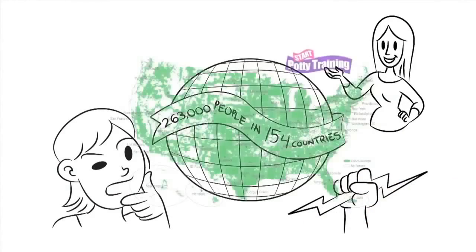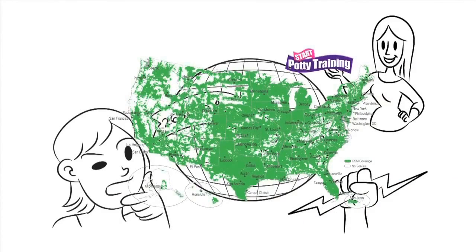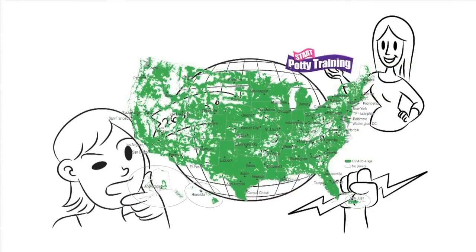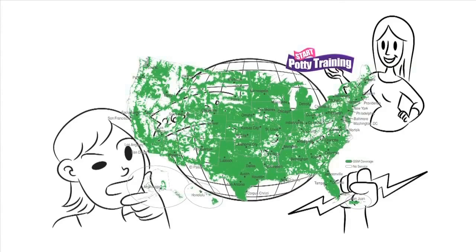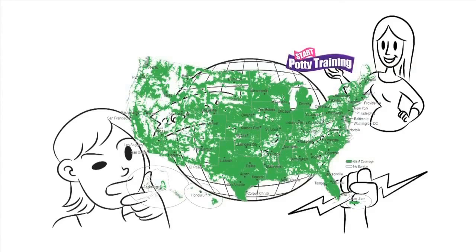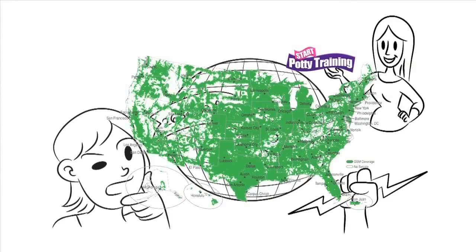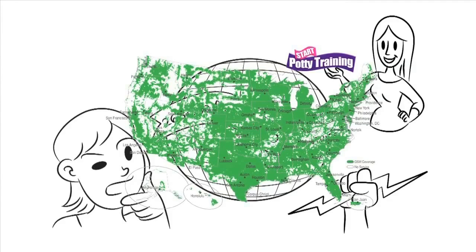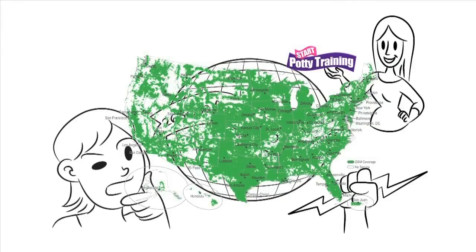As a matter of fact, I used my database of parent zip codes to plot a map of all of my readers in the U.S. alone. Keep in mind this is only a map of my U.S.-based readers, since the address data for all of my international readers couldn't be plotted by the map software. As you can see, this map displays all of the readers of the Start Potty Training program in the U.S. alone. All total, I've had over 263,000 users in 154 countries to date.